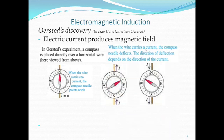So when there is a wire carrying current, the compass needle deflects. The direction of deflection depends on the direction of the current.